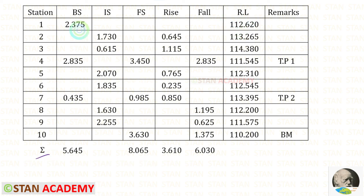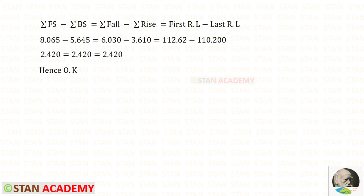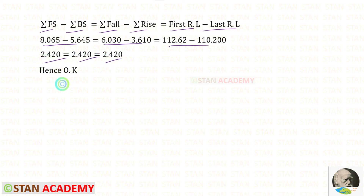Now let us find the summations. When we add all backsights we get the summation of backsight, adding all foresights gives the summation of foresight, and similarly for rise and fall. Now let us apply the check: summation of foresight minus summation of backsight equals summation of fall minus summation of rise, and that equals the difference of first and last reduced level. For all three we are getting the same value, hence OK. Thank you for watching this video.